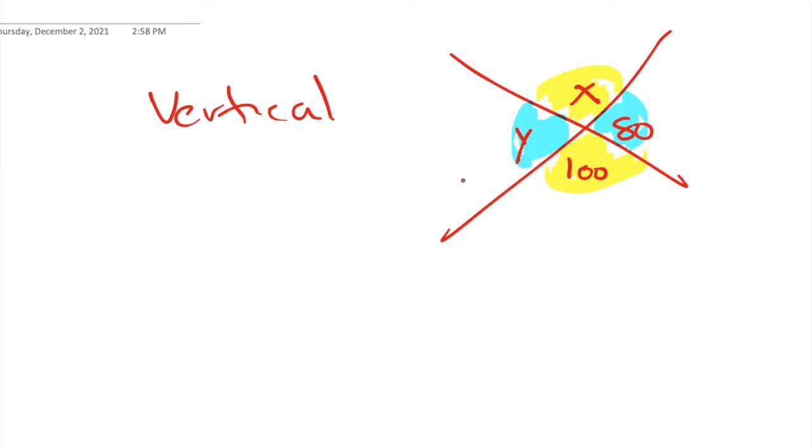But what you also notice is we have a linear pair. Every blue and yellow one makes a straight line or half a circle. Blue and yellow, a linear pair. So linear pairs are formed in these lines as well as vertical angles.